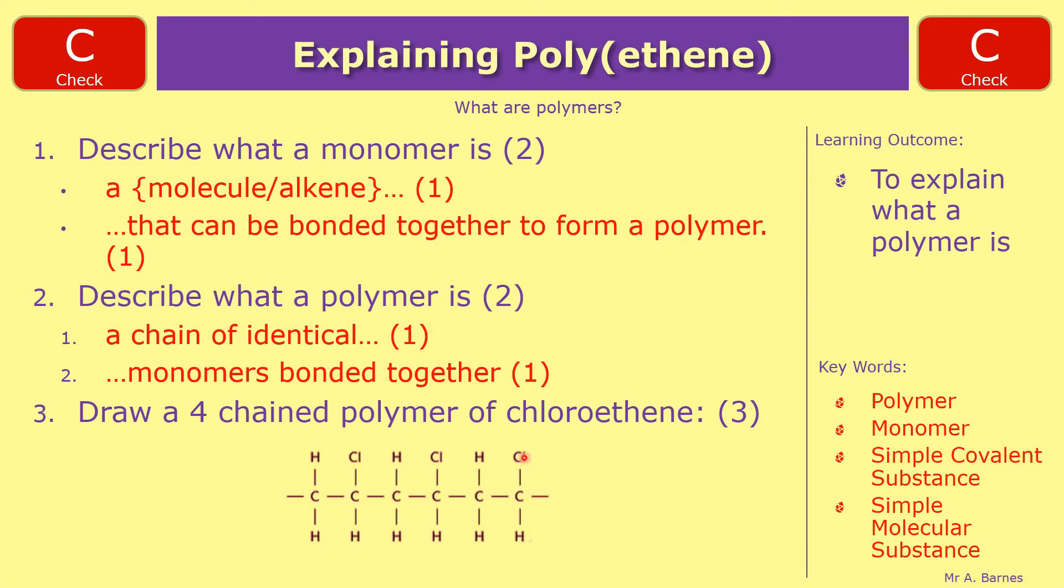Second repeat which gets you the second mark. And your third repeat which gives you your third mark. So we have four chains: one, two, three, four of our chloroethene.